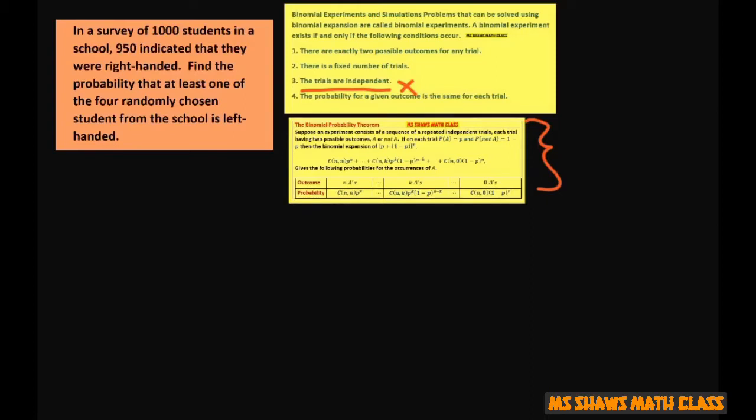The probability that the first student is right-handed is 950 divided by 1,000, which equals 0.95.